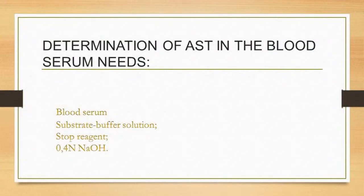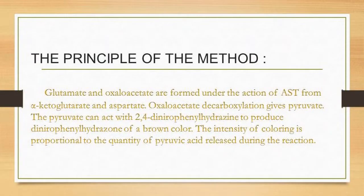Determination of AST in the blood serum requires: blood serum, substrate buffer solution, stop reagent, and 0.4N sodium hydroxide.